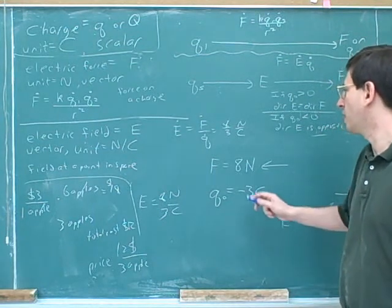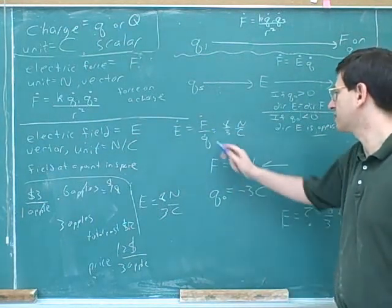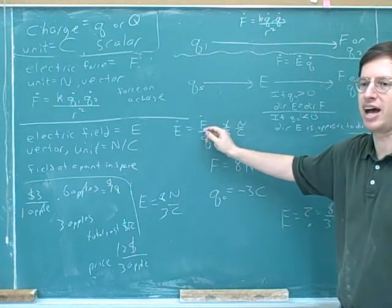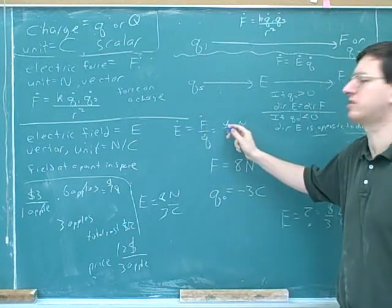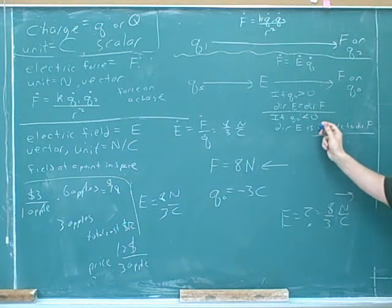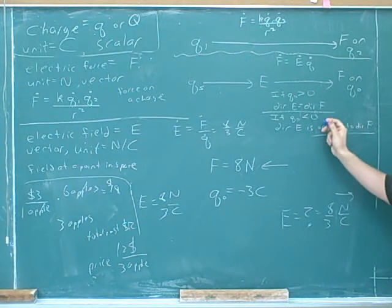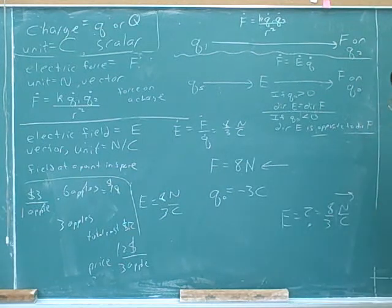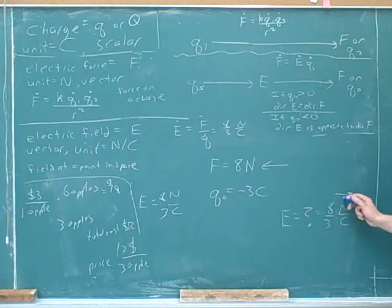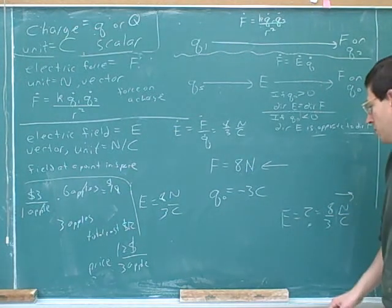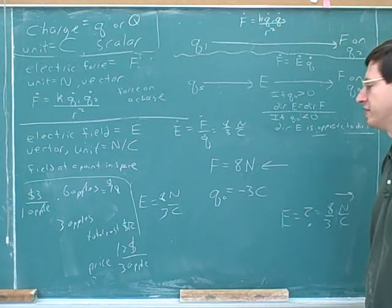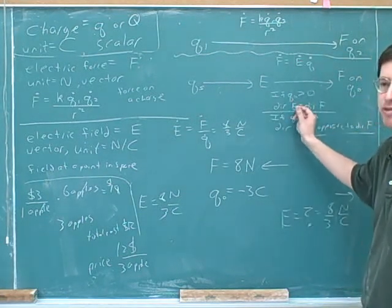One good thing, notice that we don't plug in the signs if you are using the formula. The purpose of the formula, that's why I'm putting in these dots, is just to give us the magnitude. We already have a perfectly good way to figure out the directions based on our verbal description here. So I didn't plug in a negative three here. Of course, if you're solving a problem, it might not be good enough to say that the field here is to the right. It might be better to say that it's positive 8 thirds, if to the right is your positive direction. So the direction of the field can also be described with a sign. But the sign doesn't come from the formula, it comes from this idea.